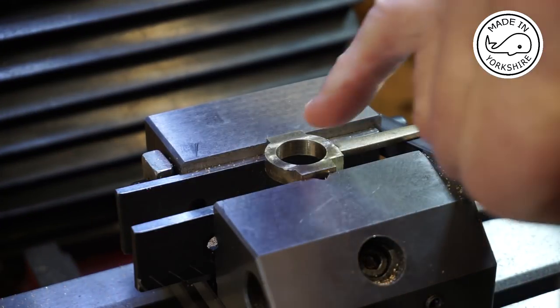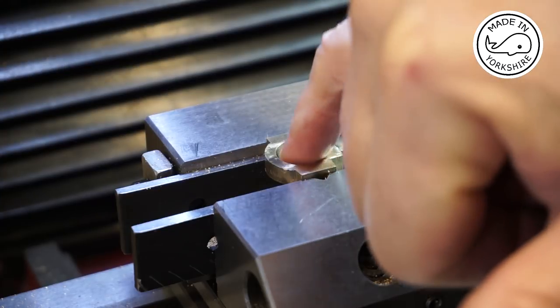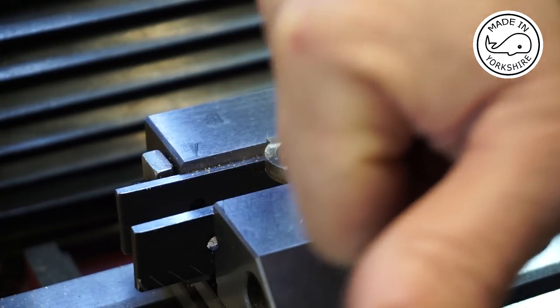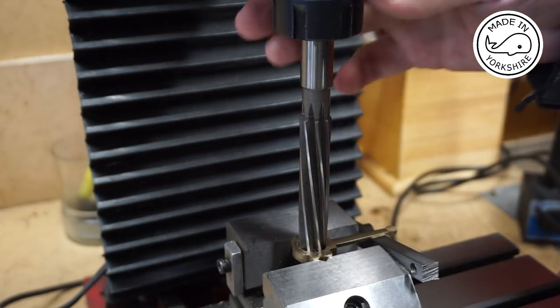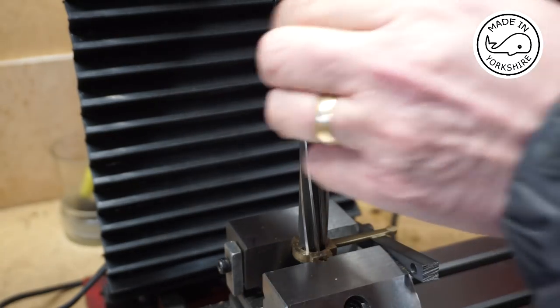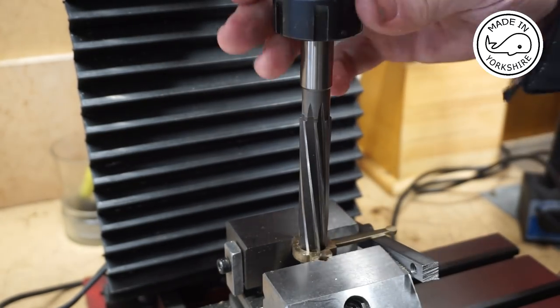Well the diameter's worked out to be 0.613 so I'm quite happy with that. We've only got 12 thou to come off with the reamer. This is a hand reamer so I'm just using a fine feed very slightly and turning it.